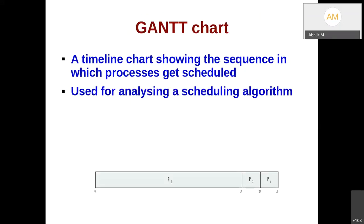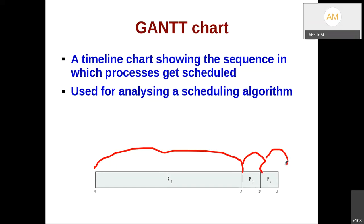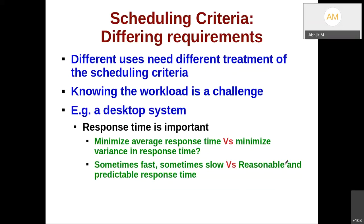One final concept: there is something called a Gantt chart — a timeline chart showing the sequence in which processes get scheduled, used for analyzing a scheduling algorithm. For example, a Gantt chart might show that process P1 executed from time 0 to 24, process P2 from 24 to 27, and P3 from 27 to 30.